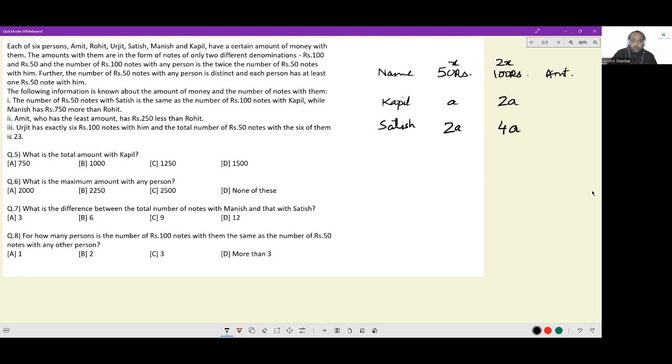Next is, while Manish has 750 more than Rohit. So let's say this is Manish this is Rohit. So if Rohit has b and 2b and Manish has c and 2c, the amount of money that Rohit will have will be 50b plus 200b and the amount of money that Manish has will be 50c plus 200c or the difference between them is 250 times c minus b and this is equal to 750 or c minus b is equal to 3 or c is equal to b plus 3.